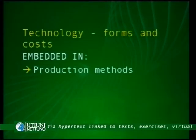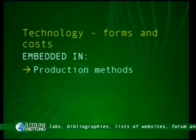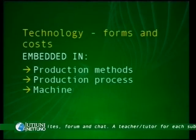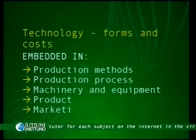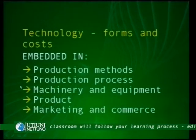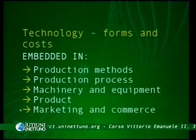To be specific, technology could be considered in terms of forms it could assume, and costs. When it comes to the embeddedness of technology, technology could be embedded in production methods, production processes, machinery and equipment, product, and marketing and commerce. We have aspects related to the physical manufacturing or physical delivering of a service, as well as the idea of product related to the marketing strategy and commerce — the final phase of reaching the target markets.